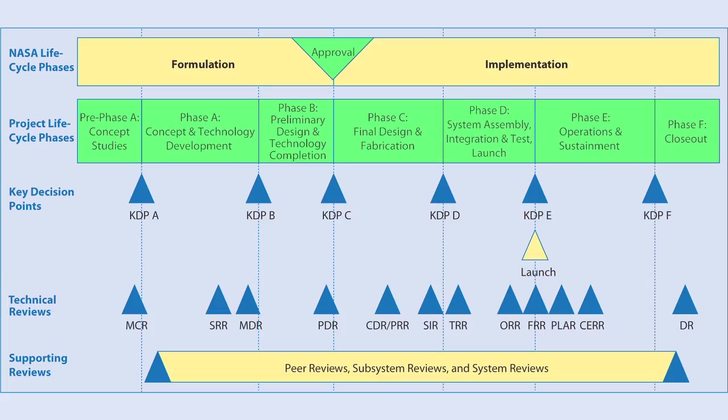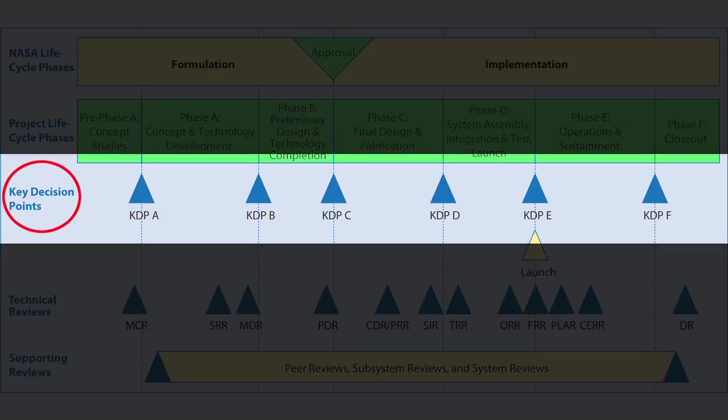There are also similar programmatic gates called key decision points. Key decision points occur at the end of every phase — phase A, phase B, and so on. They are a chance for program managers to discuss: are we programmatically on track? Have we technically matured? Is our schedule still holding? Are we spending the right amount of money for this phase? Are there risks or issues we should be concerned about? At each programmatic gate, a decision is made about whether to go forward, made by people overseeing the project rather than those working on it directly.